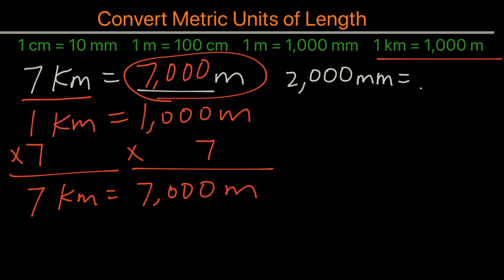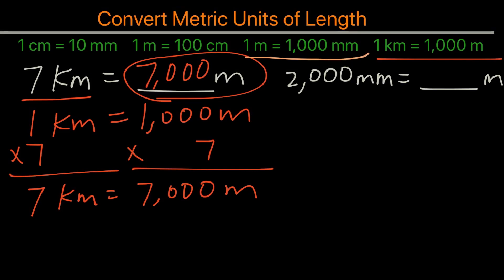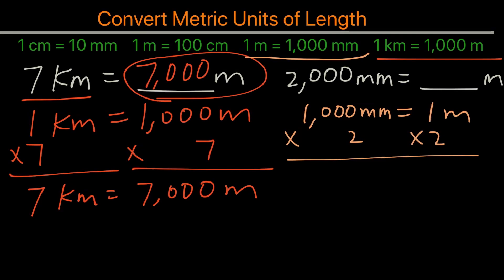Now what about this one? 2,000 millimeters equals how many meters? The conversion method we want to use is: for every meter, there are 1,000 millimeters. So we need to multiply by 2, because 2,000 millimeters equals 2 meters. Therefore, the answer would be 2.